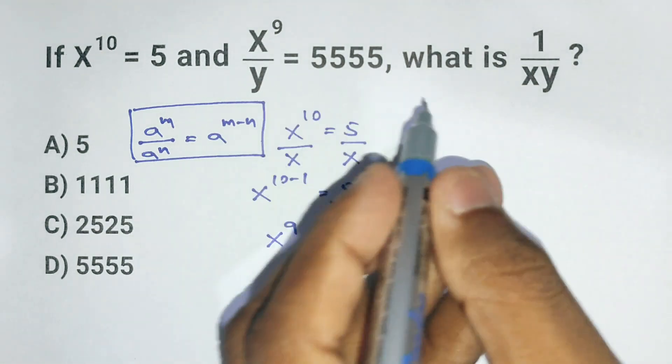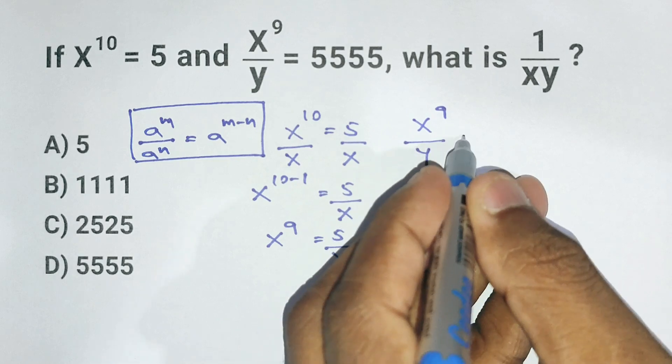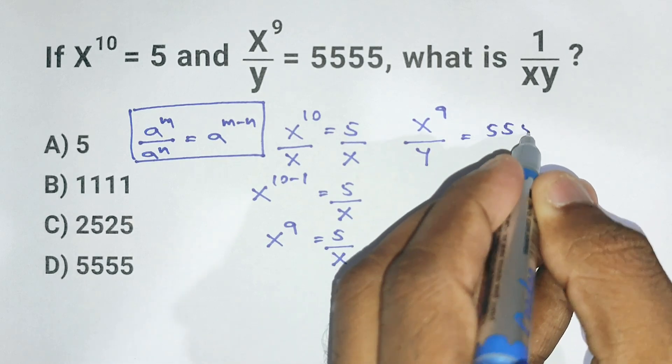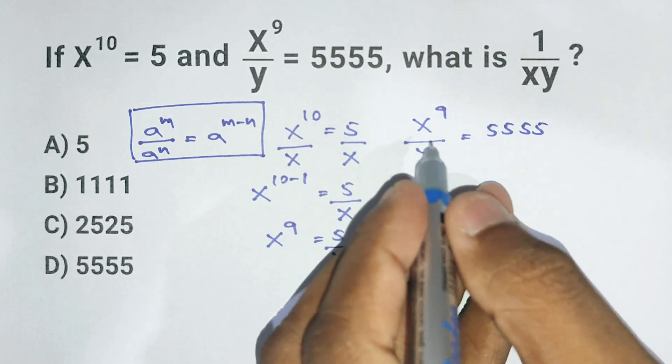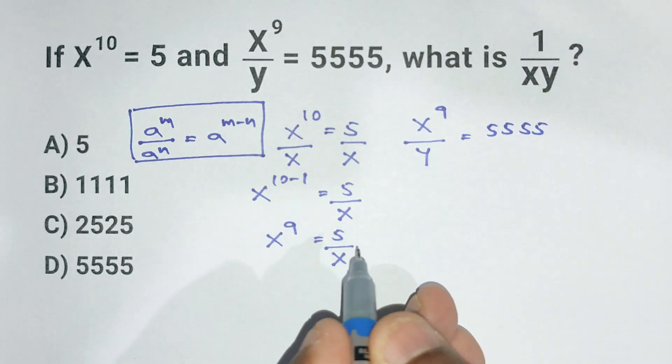Now back to the other equation: x to the 9 divided by y equals 5555. But we just found that x to the 9 is 5 divided by x, so let's plug that in.